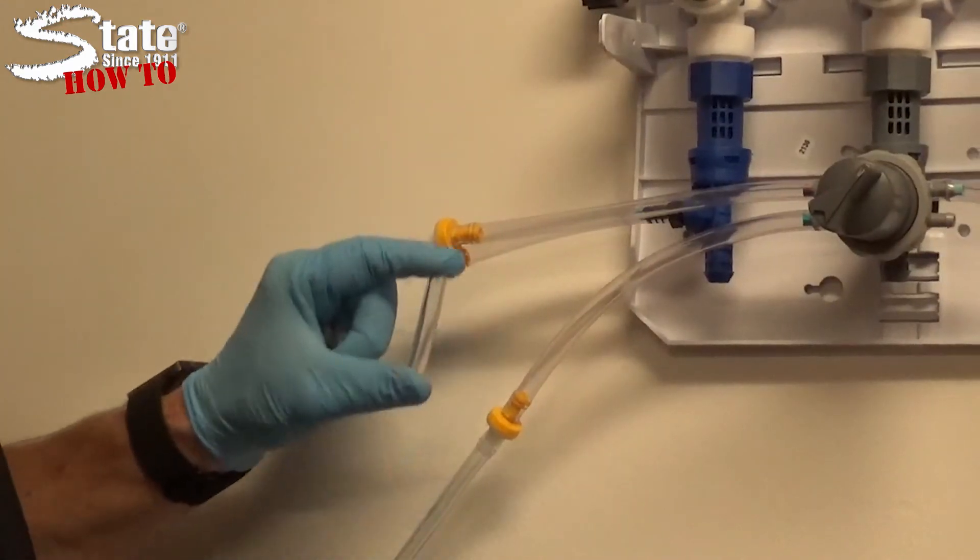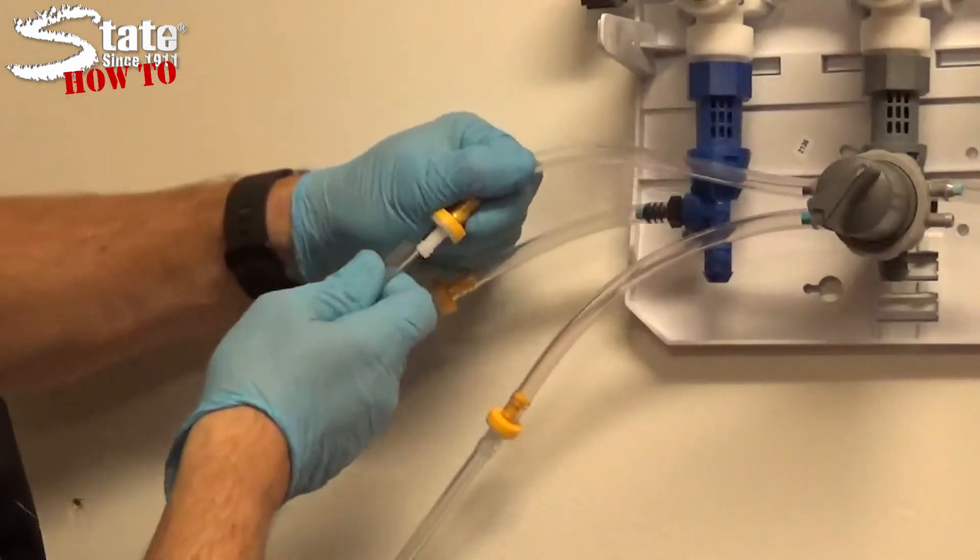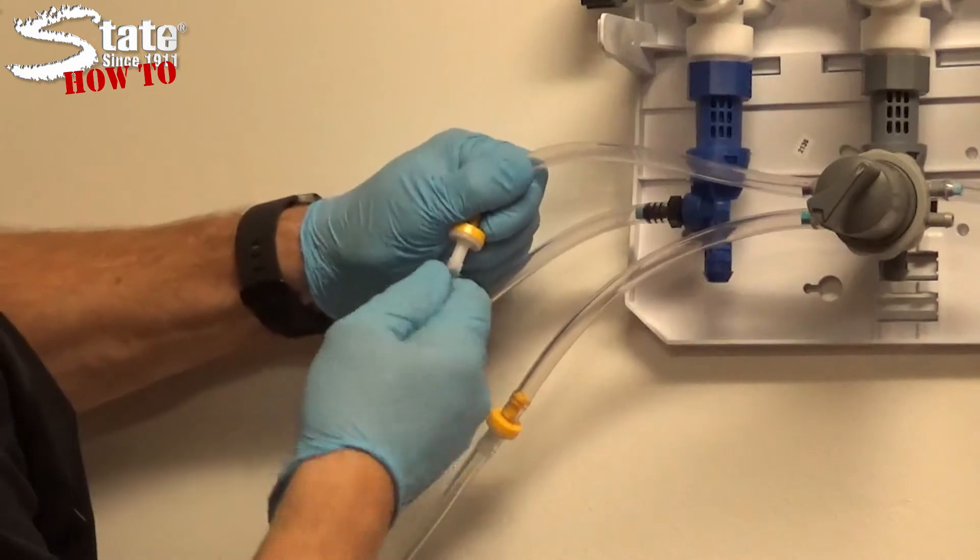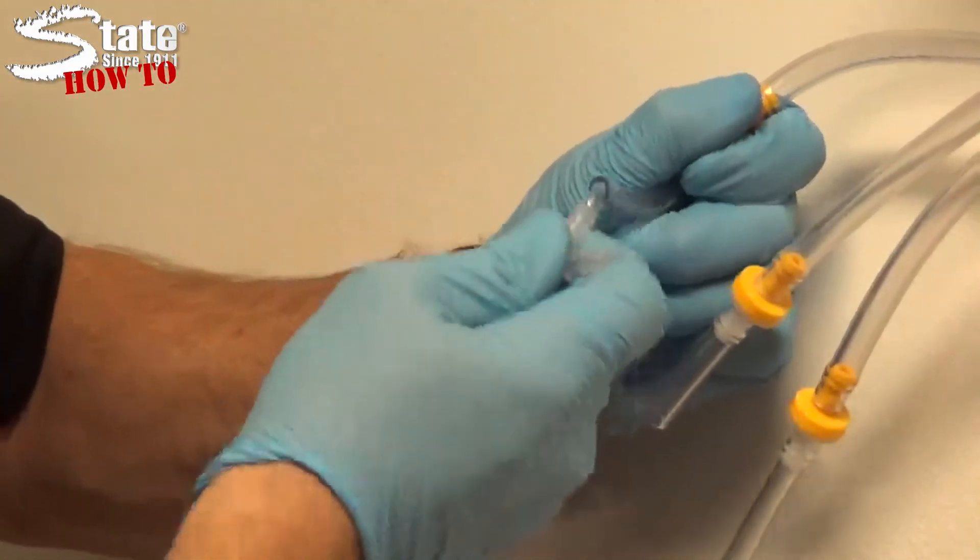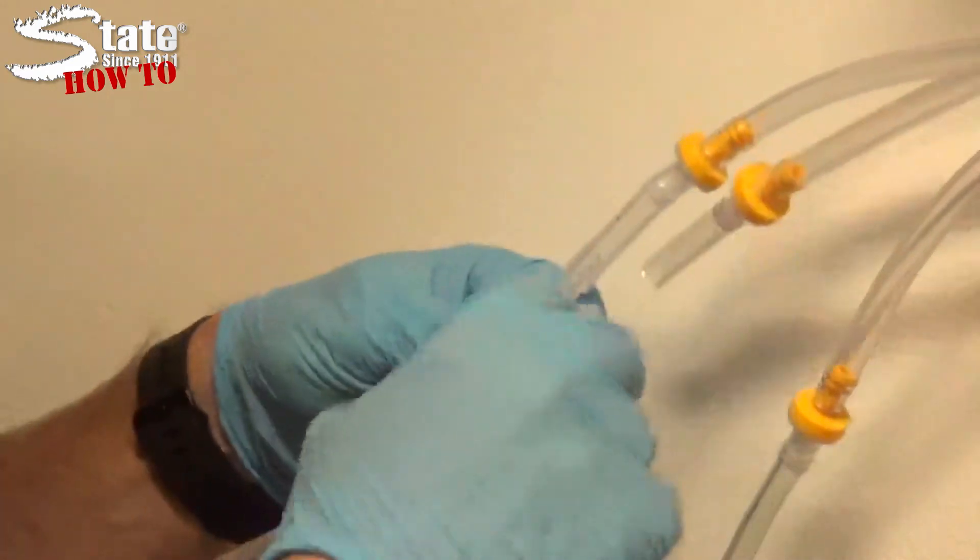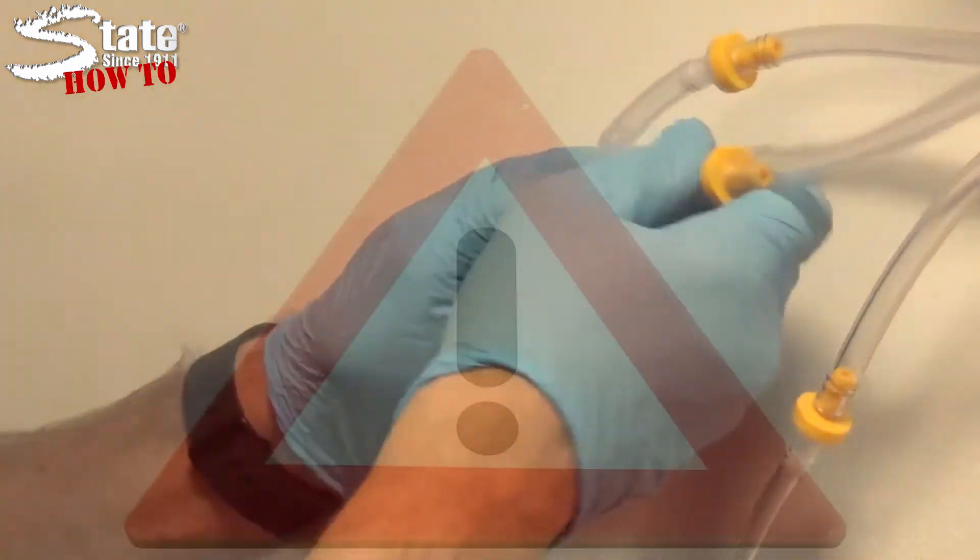If using one product for both bottle and bucket fill, use the small plastic Y connector. Use the two tubes coming from the Y to connect the feed tubes to the base unit. One should go to the bucket fill barb, and one should go to the bottle fill barb.